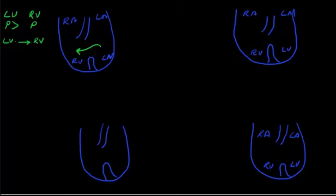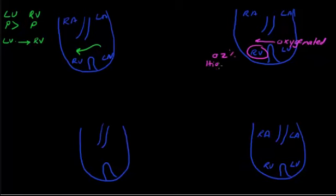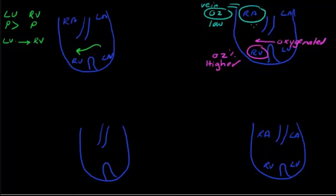The second issue is this: in the left ventricle, you have already oxygenated blood. So this blood is oxygenated, and now more oxygen comes into the right ventricle. So now the oxygen saturation in the right ventricle will be high. You already know oxygen saturation in the right atrium is low, because it receives blood from the venous system. But the oxygen saturation in the right ventricle will be high.